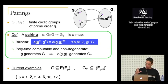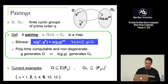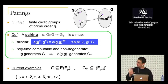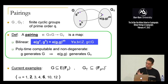Non-degeneracy is very important because there's always a bilinear map that just maps everything to one — that's not useful. So we always have to argue non-degeneracy. In all the constructions from algebraic geometry, proving bilinearity is fairly straightforward, but proving non-degeneracy is a nightmare. Most of the work in constructing these pairings is proving that they're non-degenerate.